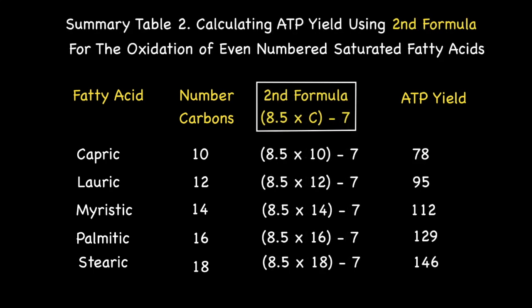Finally, here is the second table that uses the second formula. You will notice from these tables that the number of ATPs produced goes up in accordance with the length of the carbon chain.